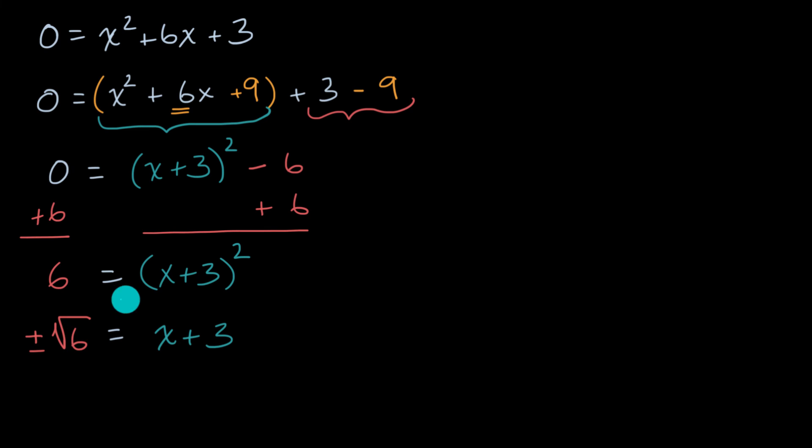And so now we can, if we want to solve for x, we can just subtract three from both sides. So let's subtract three from both sides. And what do we get? We get on the right-hand side, we just are left with an x, and that's going to be equal to negative three plus or minus the square root of six.